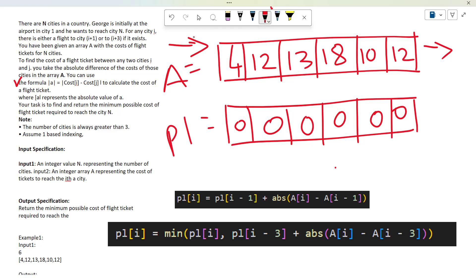There are chances that he can go from one city forward or he can go three cities forward. They're asking us what is the minimum price to get from the first city to the last city.